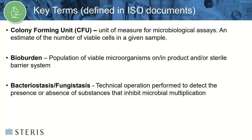Let's review some key terms that will come up throughout the webinar. Colony forming units are our microbiological unit of measure. In theory, during incubation, a single cell replicates on growth media to give rise to a visible colony. These colonies can be counted to give an estimate of the viable contamination on a sample. This estimated number of colony forming units on a device is then referred to as the device bioburden — the population of viable microorganisms on or in a product and or sterile barrier system. Bacteriostasis fungistasis is the test used to ensure that the sterility test method is not inhibited by the presence of the device, which could lead to a potentially false negative or no growth result.